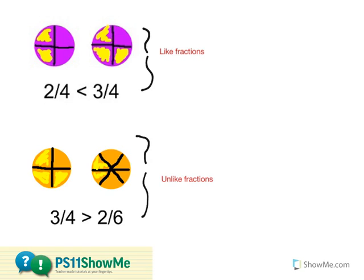In the past, when I was taking a look at like fractions, it's a little bit easier to compare these because the denominator is the same. In this case, both of these fractions are using fourths, so the total number of parts out of the whole would be four.